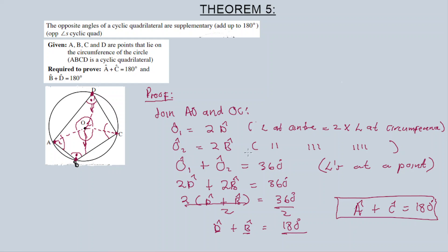Theorem Number Five is proved. There is also a converse for Theorem Five, but that is not relevant here. This theorem is applicable in Grade 11 as well as Grade 12. The opposite angles sum to 180 degrees. Theorem Five also has a converse, but I'll discuss that separately. Now let's look at calculations using Theorem Five.